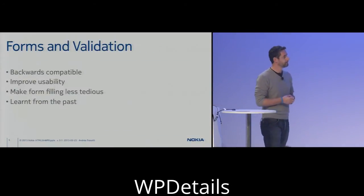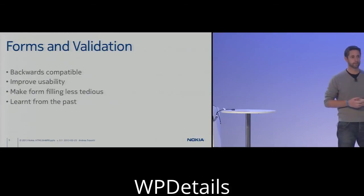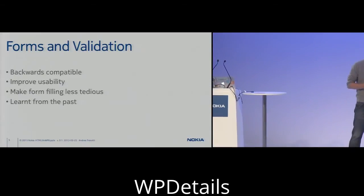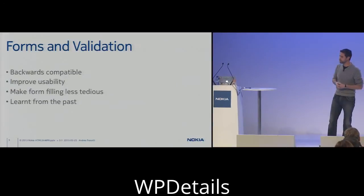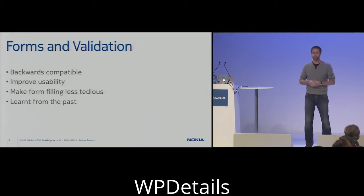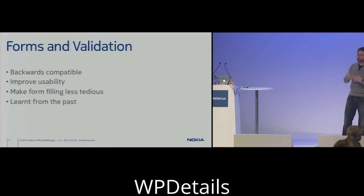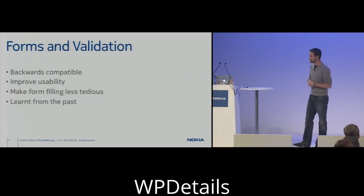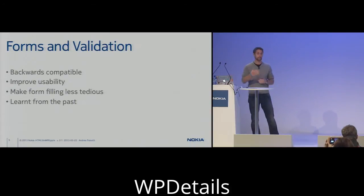I want to start with forms. HTML5 brings a number of improvements to forms, and they are backwards compatible. They introduced a number of attributes and new tags that help create forms that are easier to fill for the user and easier to validate for the developer. The improved usability comes, for example, when you can enter a number or an email address automatically, and when you have a virtual keyboard like on Windows Phone or iPhone and Android, you get the correct keypad. This means filling the form will be less tedious, and you'll have pseudo classes to help with validation.